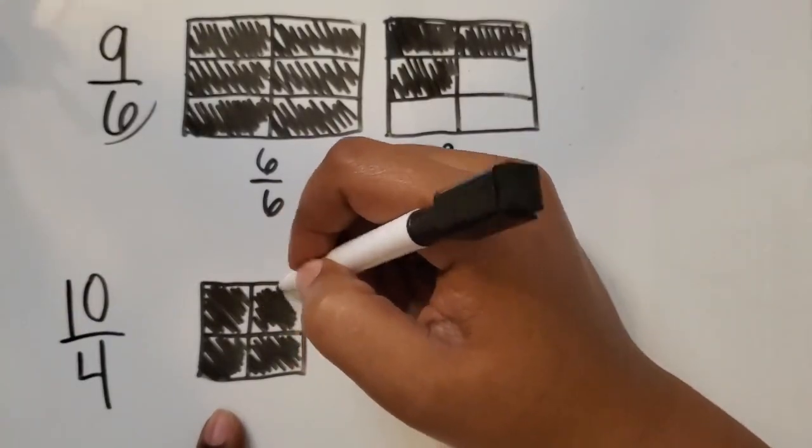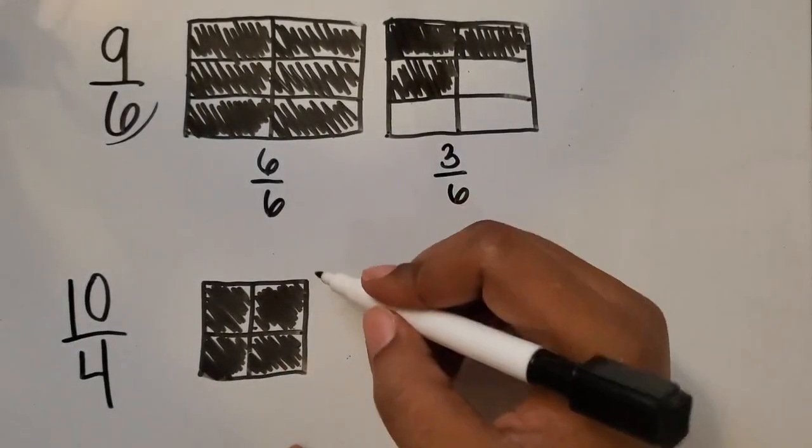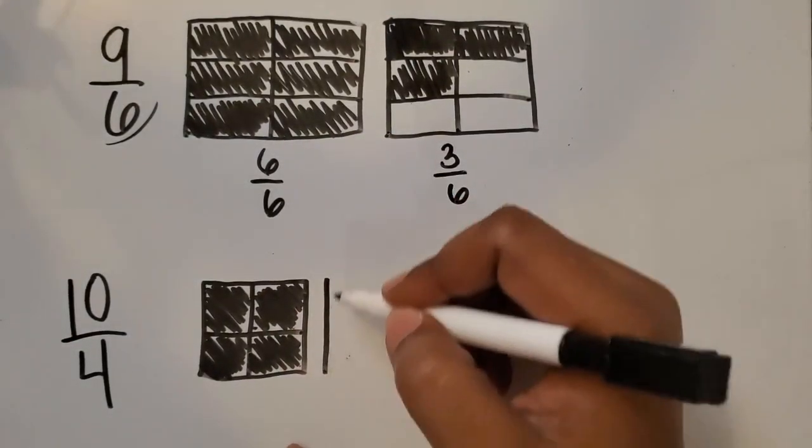Well, now we have 4 of the fourths shaded in. Okay, so we're going to keep going and draw another whole.